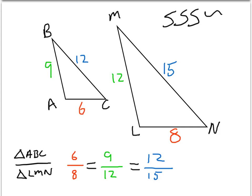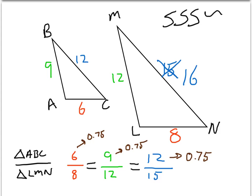So 6 divided by 8 equals 0.75. Nine divided by 12 is also 0.75. And 12 divided by 16 is also 0.75. That means all three pairs of sides are proportional because 6/8 equals 9/12 equals 12/16. That's SSS similarity. Note: the longest side of triangle LMN should be 16, not 15 — so that fraction is 12 divided by 16, which does indeed equal 0.75.